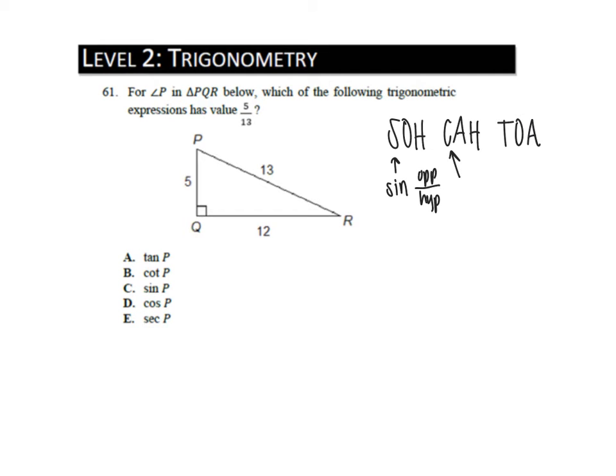The CAH part means cosine, adjacent over hypotenuse. And the TOA part means tan, opposite over adjacent. So if we look at angle P, which is what it tells us to focus on, we want to know what 5 and 13 are.